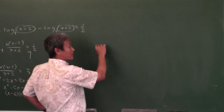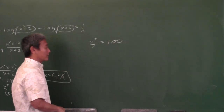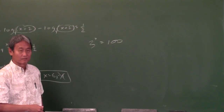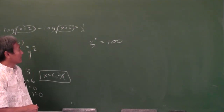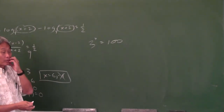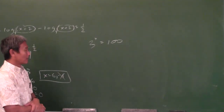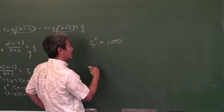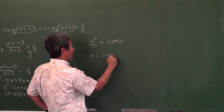Solve this equation: 3 to the x equals 100. Before we start, tell me — what is the answer going to be? 4 point something, because 3 to the fourth is 81 and 3 to the fifth is 243, so it's somewhere in between. How do you solve for x when it's in the exponent? You use logarithms. So if you change it to log form: x equals log base 3 of 100.